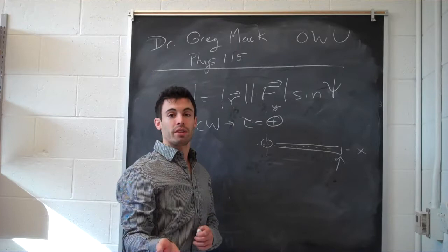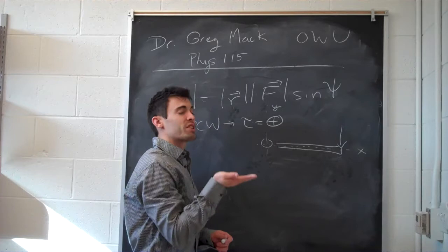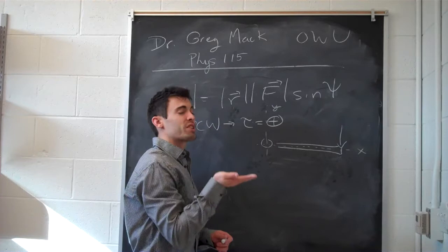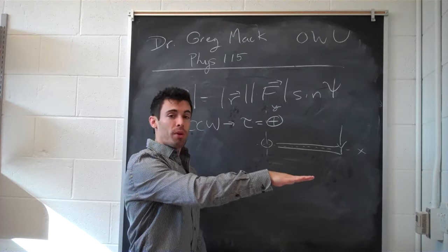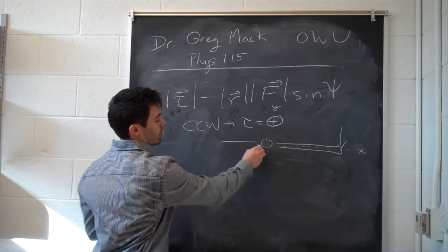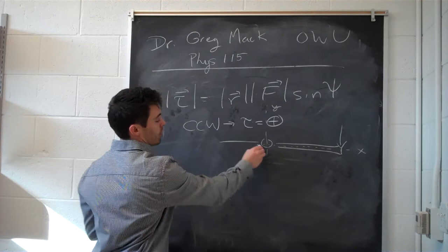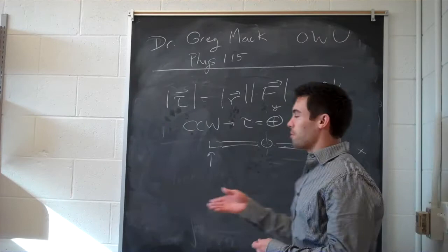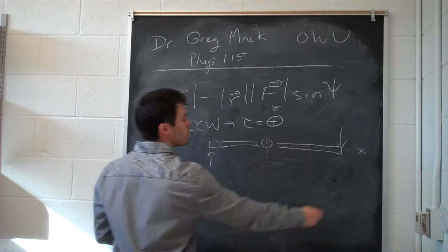Now if instead the force were directed downward, I still put my fingers in R and curl them in F. I have to turn my palm down to curl my fingers in the direction of F, and now my thumb points into the board — along the negative z-axis. That tells me the torque is in the negative z direction and the motion is going to be in a clockwise direction.